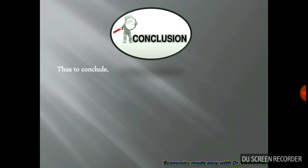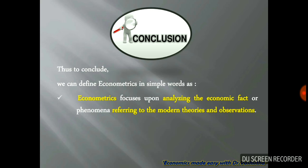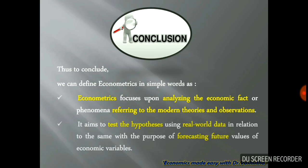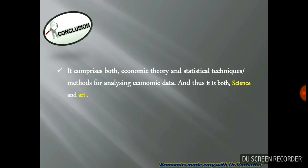So friends, to conclude, econometrics focuses on analyzing economic facts or phenomena referring to modern theories and observations. It aims to test hypotheses or assumptions using real-world data, with the purpose of forecasting future values of economic variables. It comprises both economic theory and statistical techniques for analyzing economic data. Thus, it is both a science and an art.